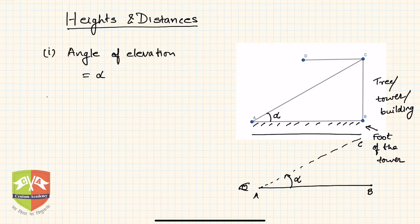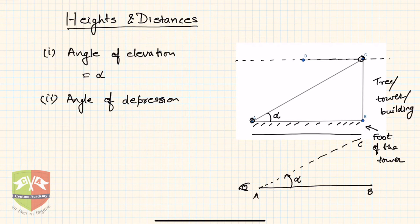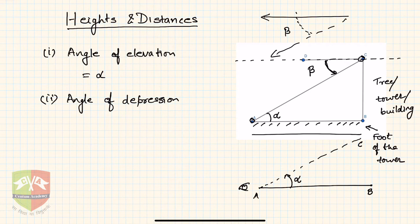Similarly, there is the concept of the angle of depression. From point C, you are now viewing point A below. CD represents a line parallel to the ground. The angle through which CD has to rotate to coincide with line CA is called the angle of depression — the line of sight sweeps downward through that angle.